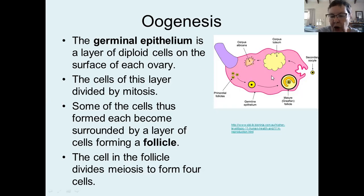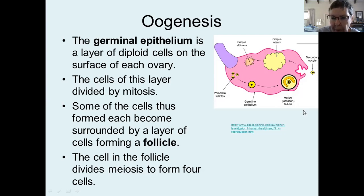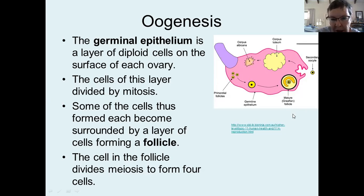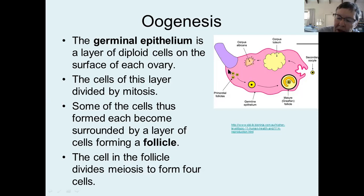If one looks at a section through an ovary — this is obviously a longitudinal section because it's cut through the long axis of the ovary and not through the short axis — this diagram shows you a whole lot of processes that are occurring here. Just like with the testes and the seminiferous tubules, there is a layer of cells around the outside that is diploid, and that is the germinal epithelium.